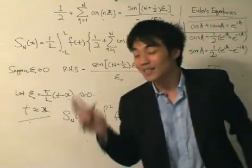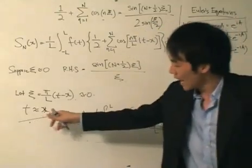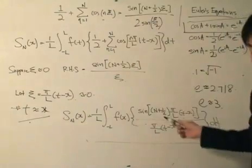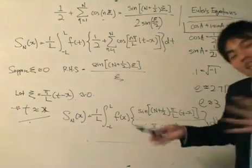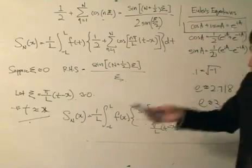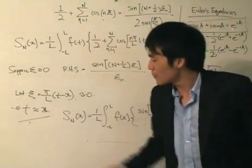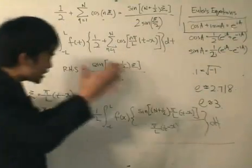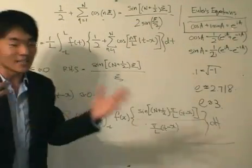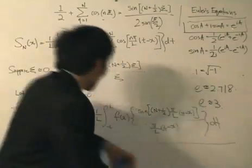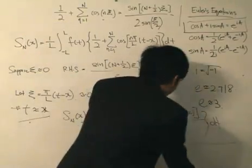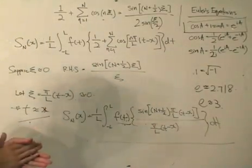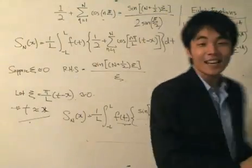Objective number two was to find a relationship between t and x. This equation is valid under the condition that t is approximately equal to x — that is the relationship between the independent variables. Next up is using this equation to analyze a general function f(t) and investigate the Gibbs phenomenon from there. Thank you for the lesson and I hope you enjoyed it.